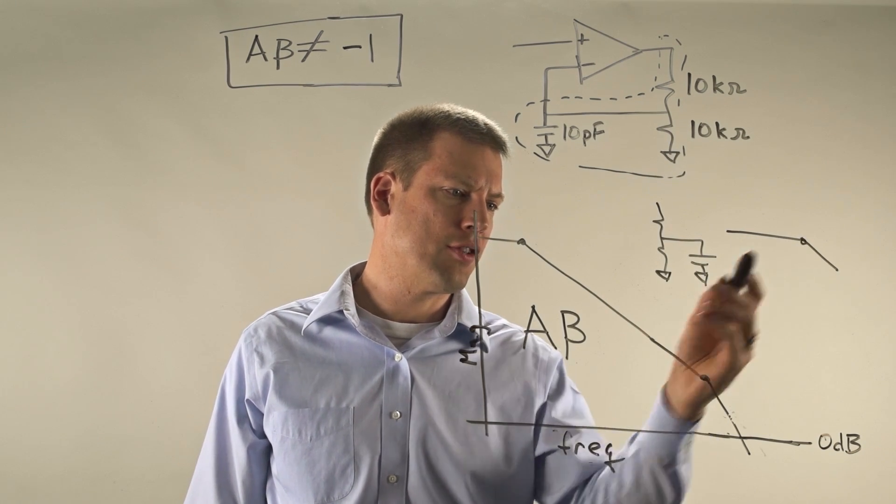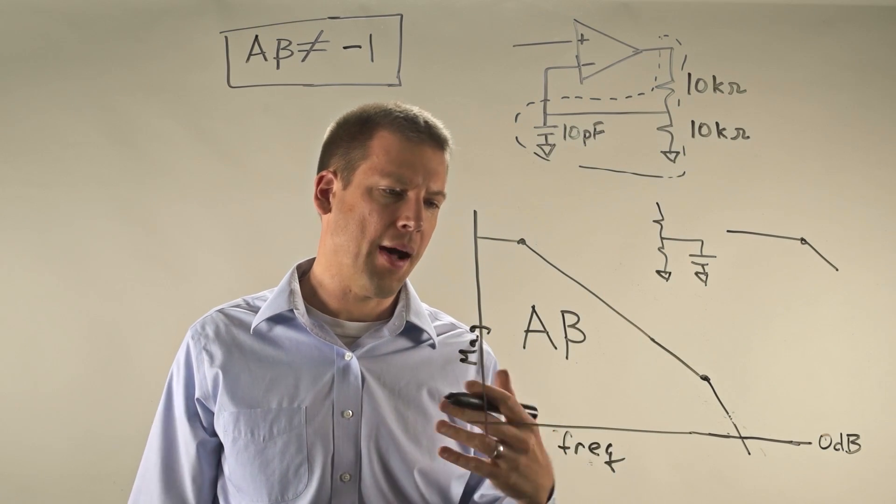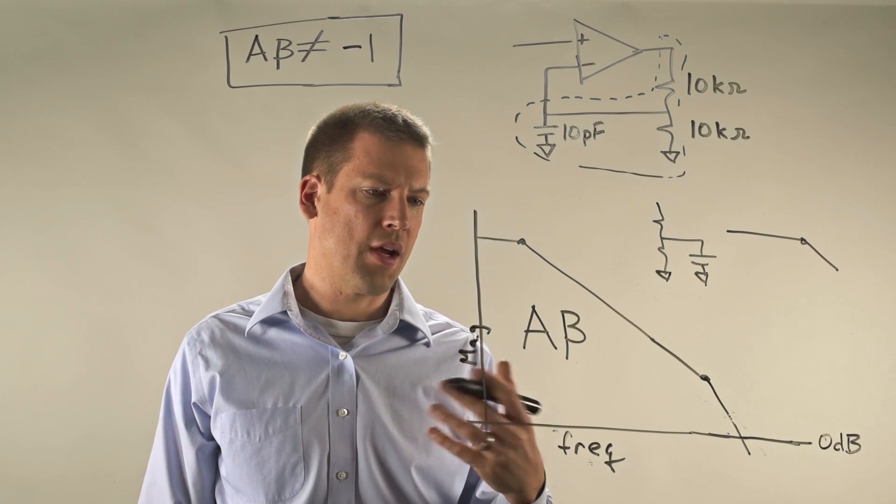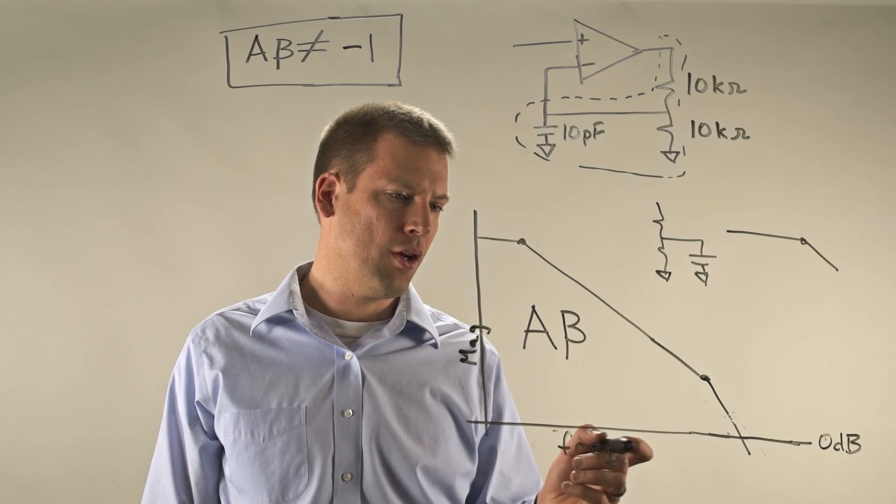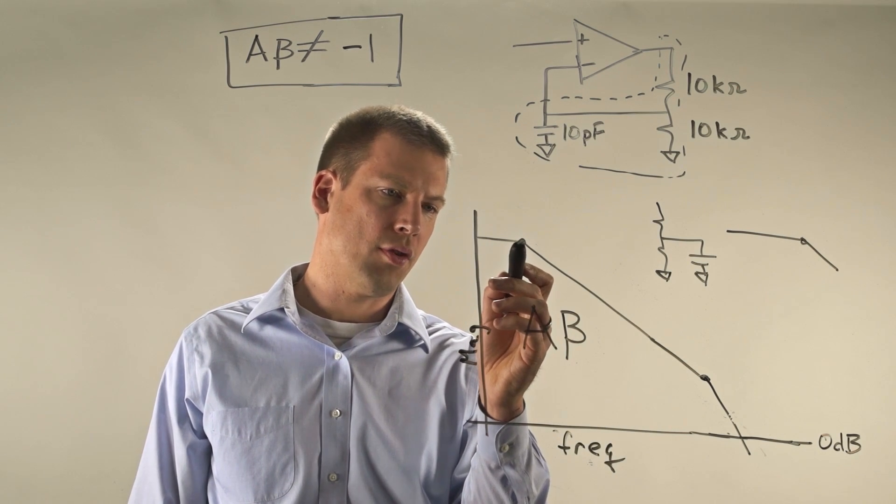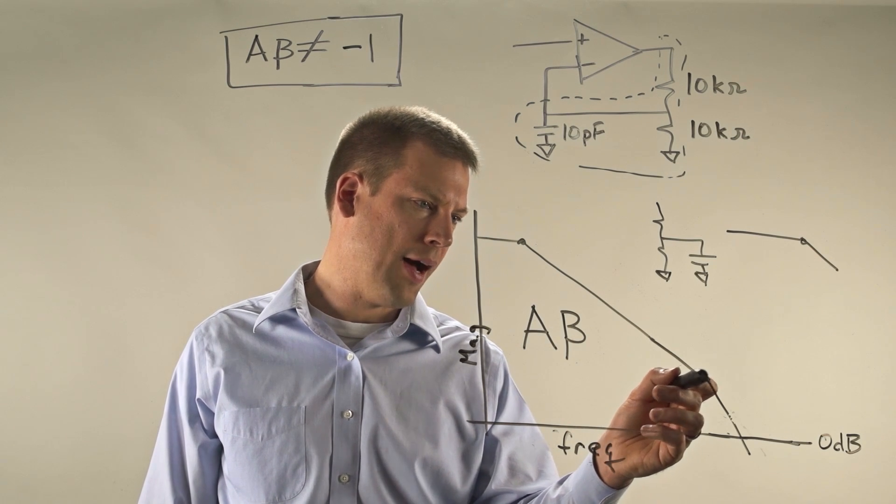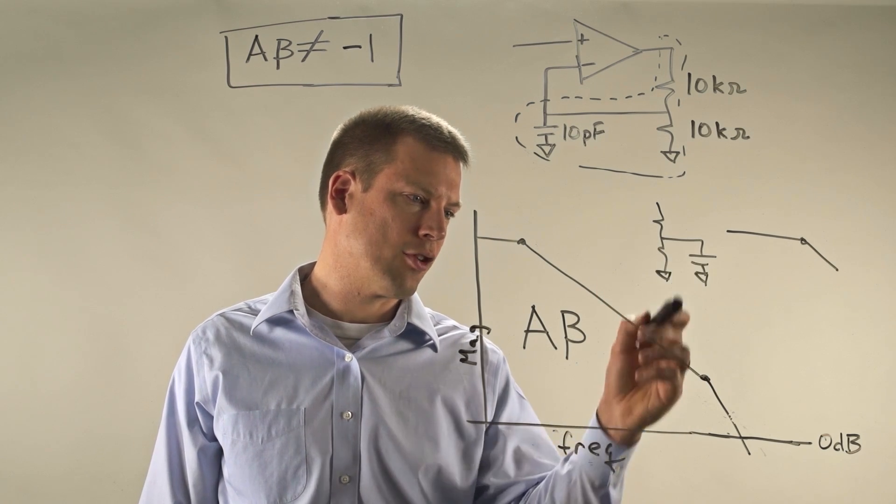And so that is this pole. And so now if we transfer this beta and lay it on top of or combine it with our transfer function from our op amp, we'll end up getting a loop gain something like this, where we have the pole that's formed by our op amp that's up here, and we have the pole formed by our RC circuit here.